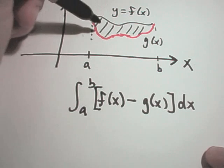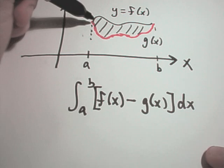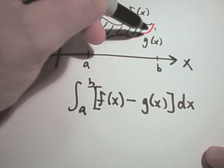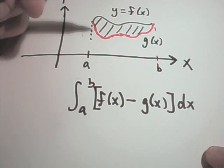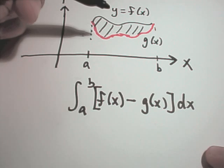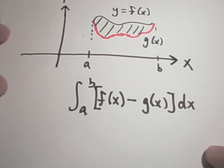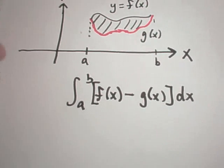A lot of times the problem is going to be finding out which integral is the bigger one, which one's the smaller one. If you get these mixed up at the end, your integral is simply going to turn out to be a negative value, which means you've got them flip-flopped and you simply need to go back and change that.